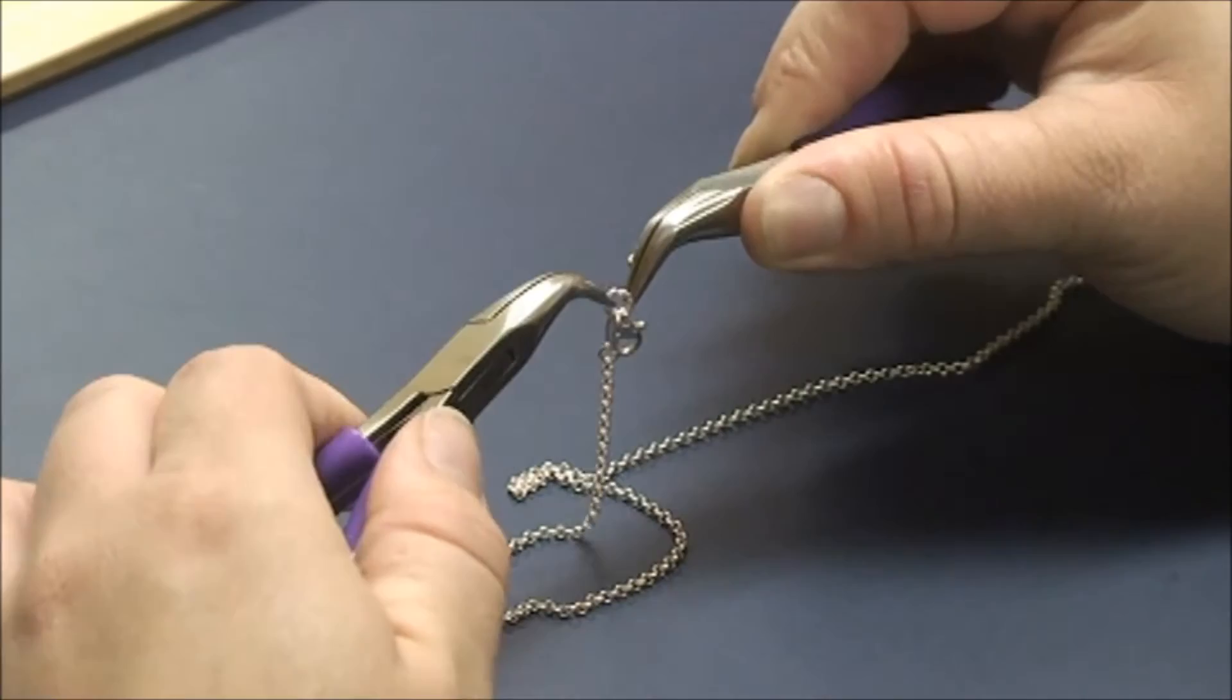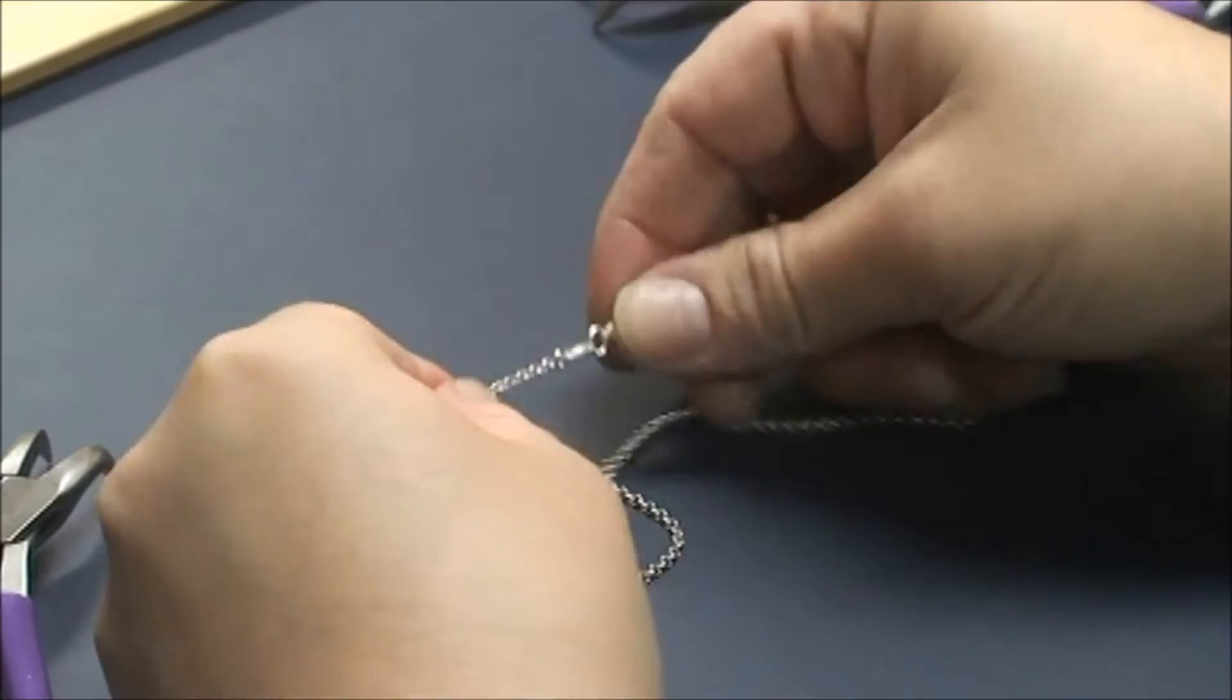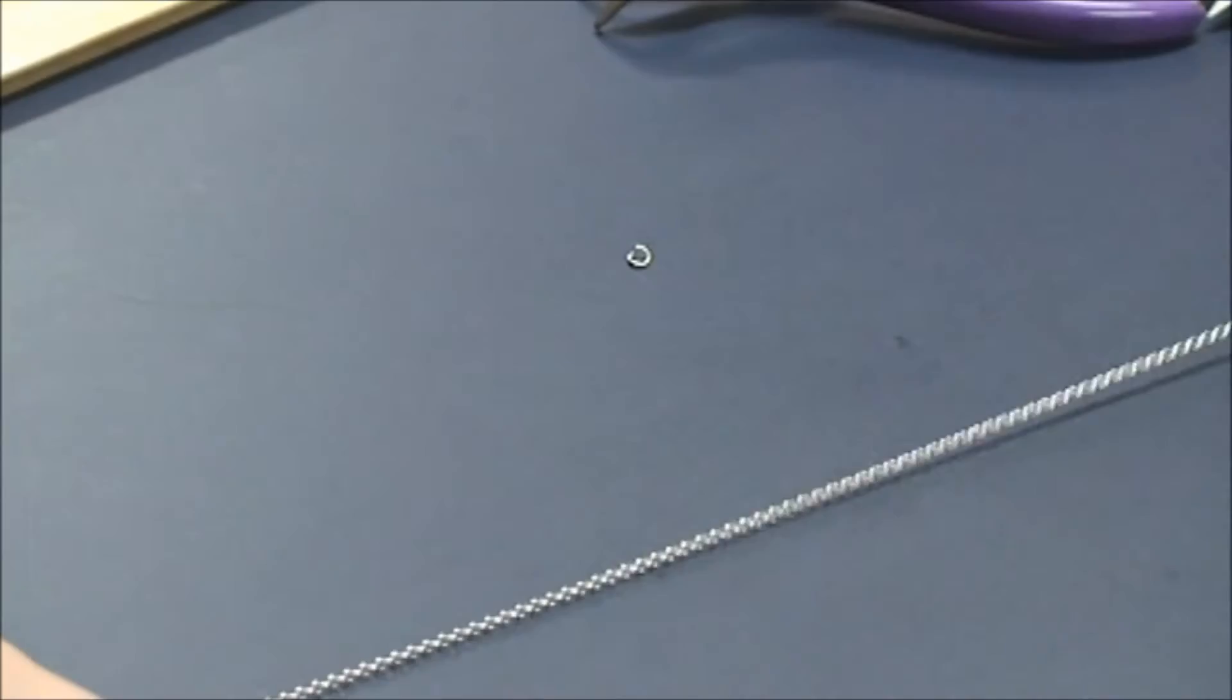You want to make sure you're not pinching the pliers too hard, you don't want to mark the jump rings, but secure enough that you have a good grip on the jump ring itself, and then just double check the closure again. That's a nice secure tag.